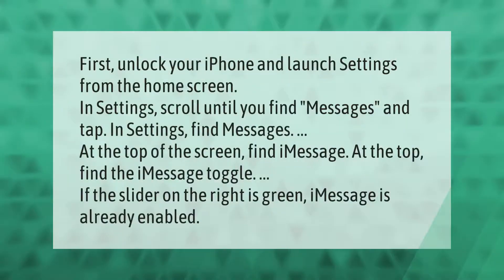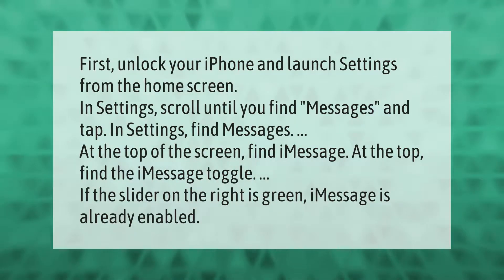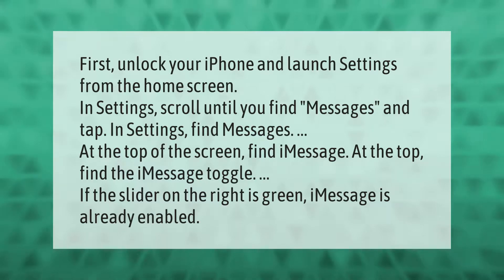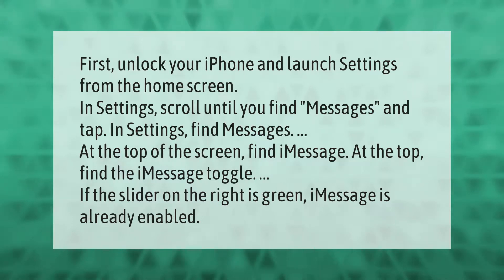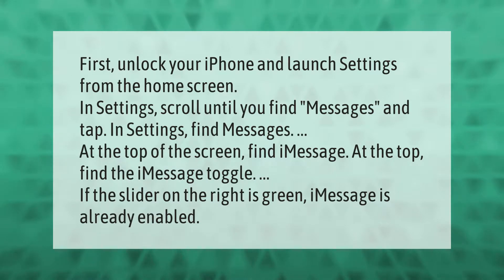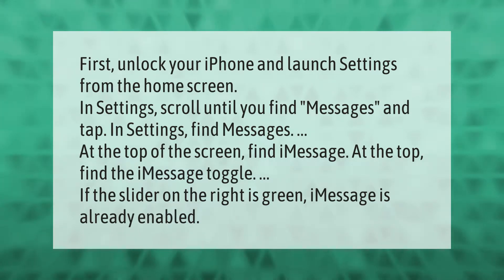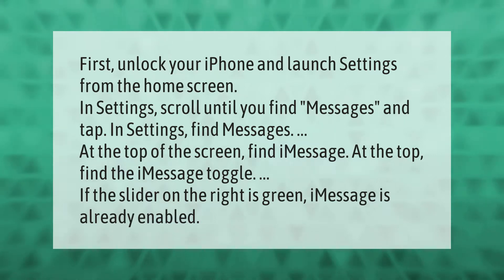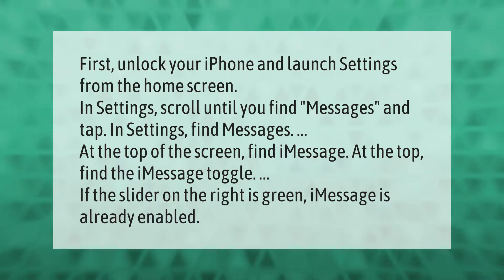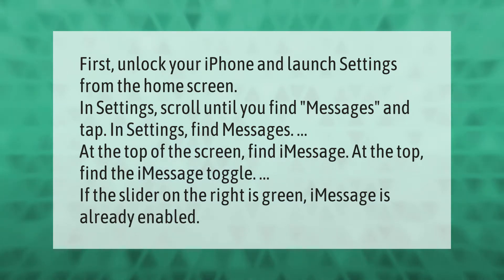First, unlock your iPhone and launch Settings from the home screen. In Settings, scroll until you find Messages and tap it. At the top of the screen, find the iMessage toggle. If the slider on the right is green, iMessage is already enabled.